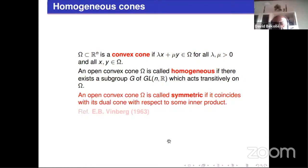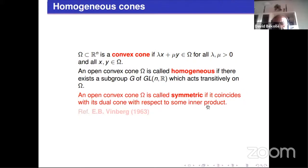A convex cone is a set where λx + μy belongs to Ω for λ, μ positive and all x, y in Ω. An open convex cone Ω is called homogeneous if there is a subgroup G of GL(N, ℝ) which acts transitively on Ω. An open convex cone Ω is called symmetric if it coincides with its dual cone with respect to some inner product. In the general case, homogeneous is studied by Vinberg.